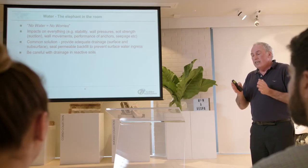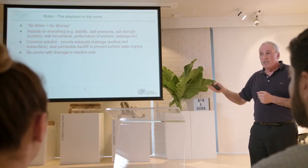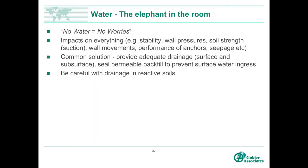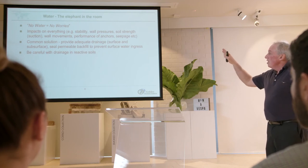Very few retaining walls fail for reasons other than water. Water usually either initiates the failure or has a big impact on it. It impacts on the stability of the wall, the wall pressures, the soil strength because of suction, the wall movements, the performance of anchors, and seepage. For example, if you've got a secant pile wall with anchors back in sand and a low water table, and the water table rises — maybe from a broken water main — the resistance of those anchors is going to halve, because you halve the effective stress acting on them.